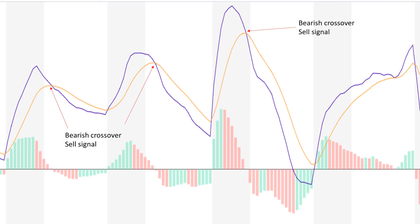Similarly, a bearish crossover occurs when the MACD line turns down and crosses below the signal line, as seen at several points on the chart. These are the points where you have to exit the market; otherwise, you lose money.